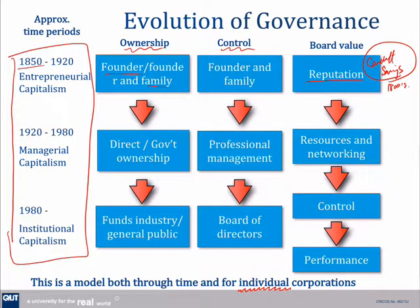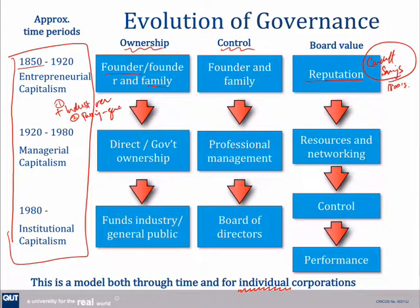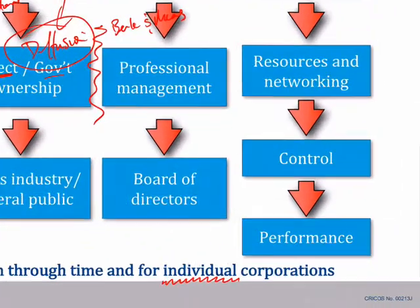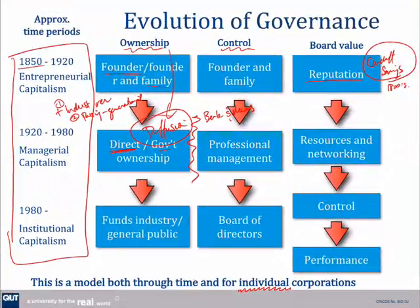These founders and families started to die out or pass their ownership on. We also had during this period the Industrial Revolution — so two factors: the Industrial Revolution and the generational passing of the baton in these companies. That led to a diffusion of share ownership, so corporations were owned directly by a number of people, maybe even some government owning some large kinds of corporations. Berle and Means in 1935 documented what they called the separation of ownership from control, and that was seen as a major issue and insight at the time.